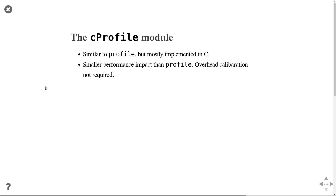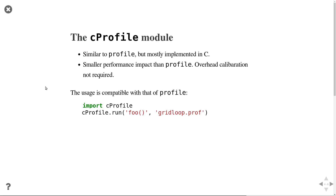The cProfile module works basically exactly like the profile module, except it's implemented in C and has a smaller performance impact. You don't need to do overhead calibration. As a guideline, I recommend just using cProfile so you don't need to worry about technical details like overhead. Instead of importing profile, import cProfile and call the runcall method in exactly the same way. You can also call it directly from the command line with python -m cProfile script.py.